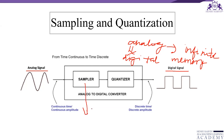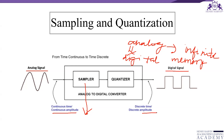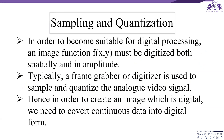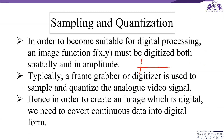In sampling, we do digitization of the continuous coordinate values. In quantization, we digitize amplitude values. Let us understand the differences between sampling and quantization in detail. In sampling, we digitize the x-axis. Let me draw a simple diagram to explain the concept.